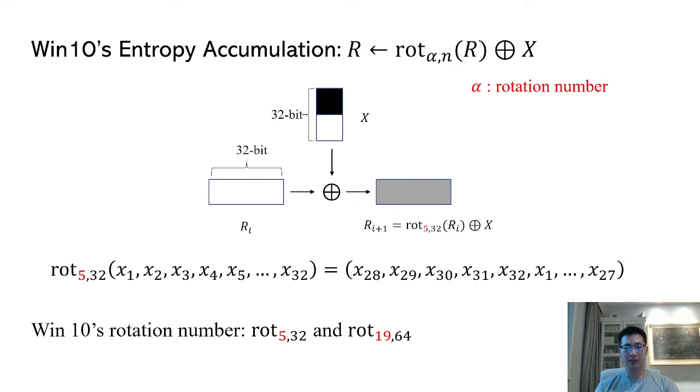To update the register R, one needs to cyclically rotate the bits of R by a fixed rotation number phi, and then XOR the input X to the result. In total, there will be 32 entropy sources being accumulated into R.